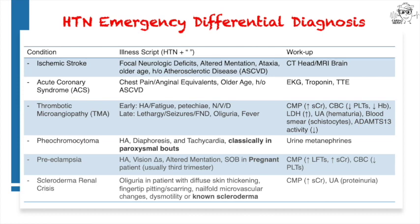The last two items, preeclampsia and scleroderma renal crisis, occur in a specific subset of patients. Preeclampsia will occur classically in the pregnant patient in the third trimester. It manifests with vision changes, headache, alteration, and shortness of breath prior to progressing to eclampsia, which includes seizures or liver failure. In patients with pre-existing scleroderma, pay attention to their renal function — you could be looking at scleroderma renal crisis, which requires prompt administration of an ACE inhibitor.